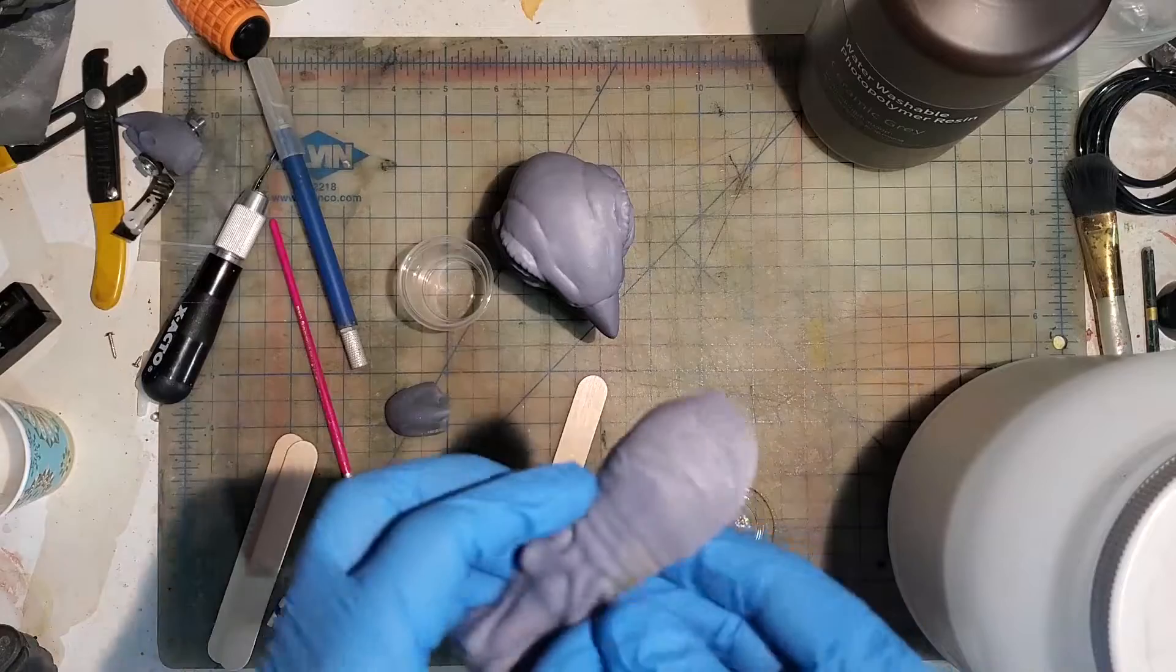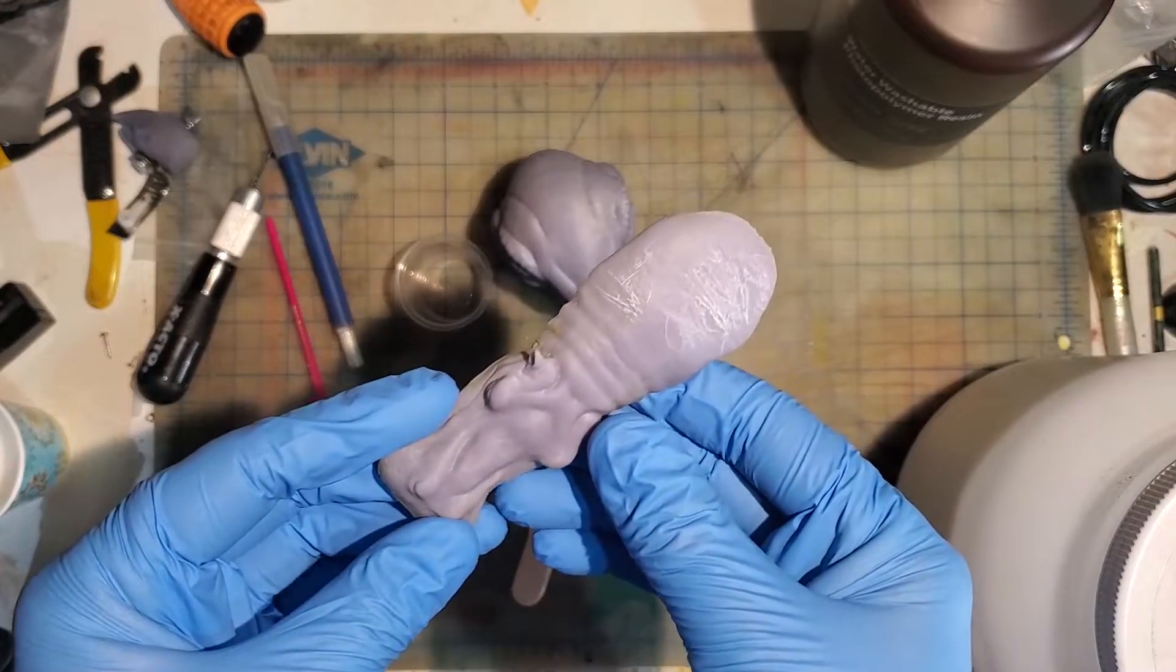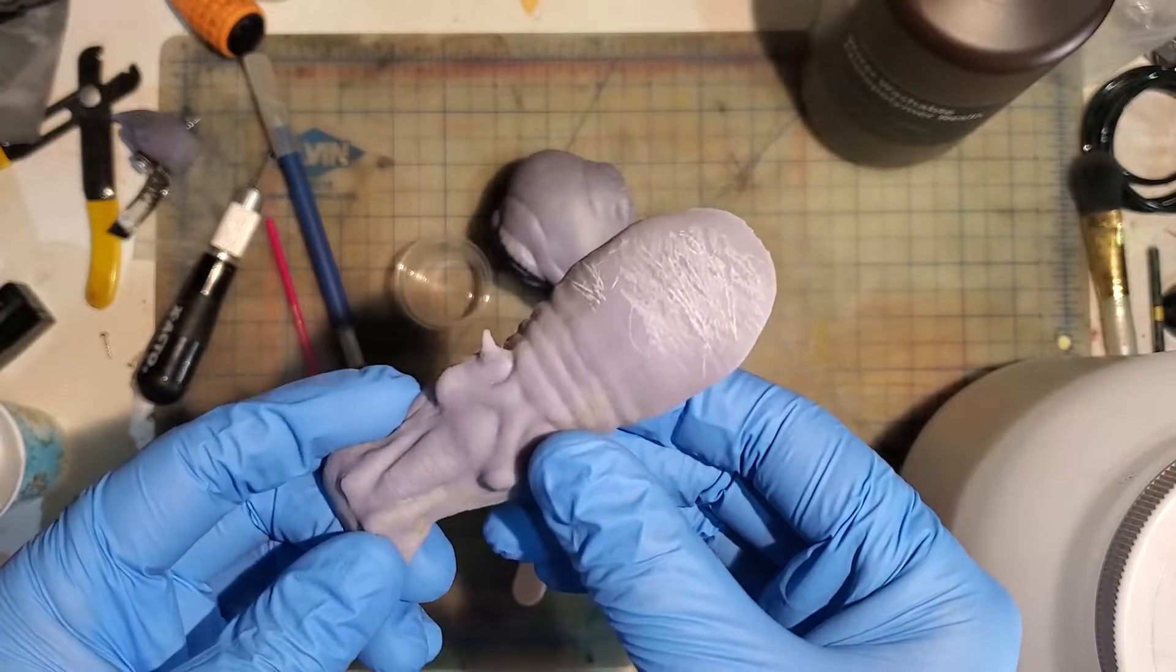This last model is a hippopotamus that I scratched with some metal tools to see if I could add some texture after the print was finished.